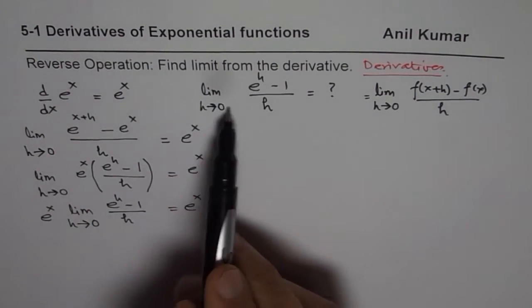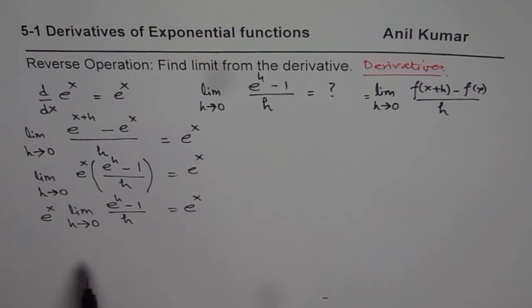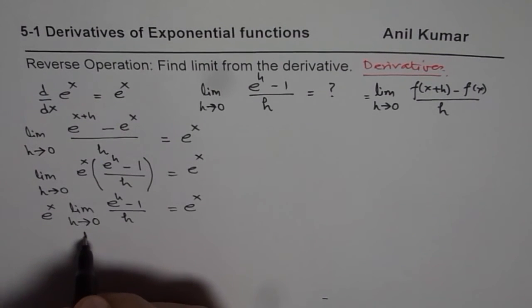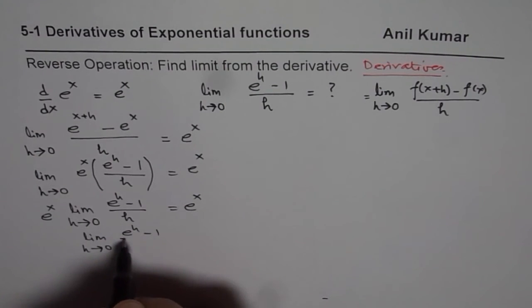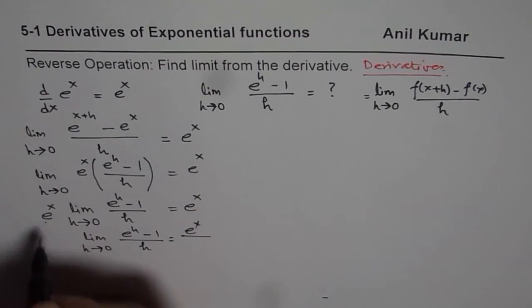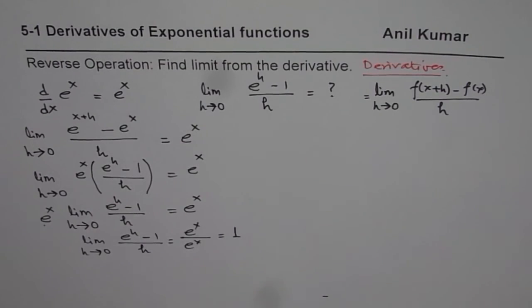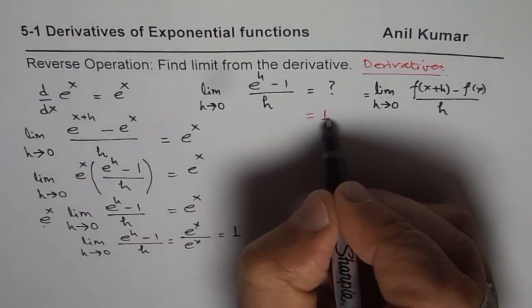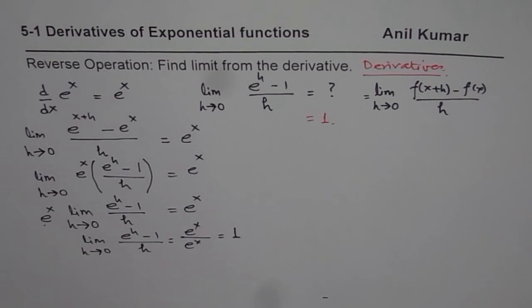From here we know what this limit is. We can divide both sides by e to the power of x, and we get our result: the limit as h approaches 0 of e to the power of h minus 1 over h equals 1. That is how we can solve such questions. I hope that helps. Thank you and all the best.